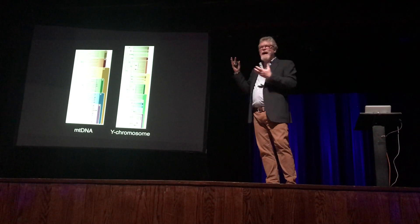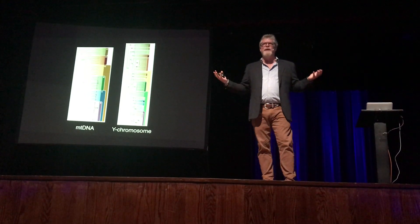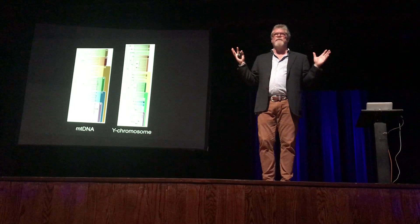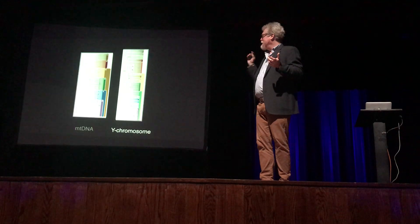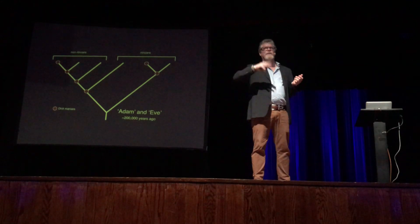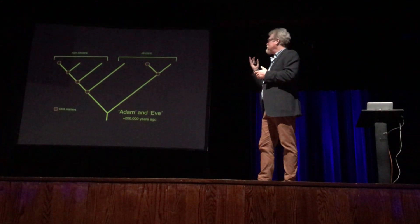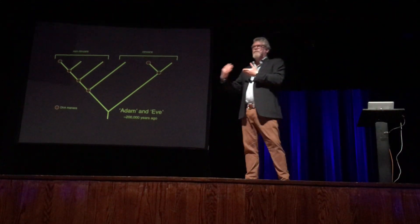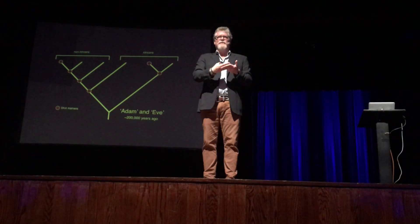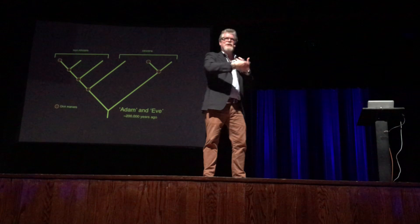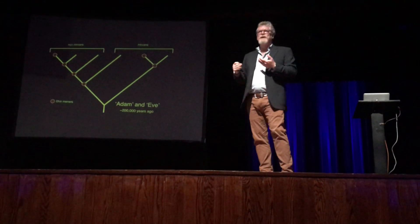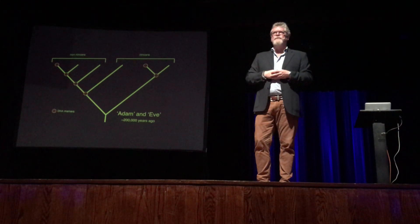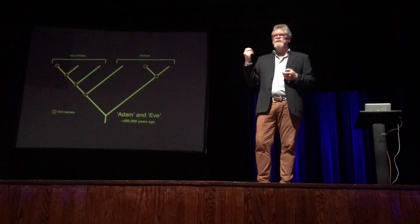By looking at these markers and assessing the pattern of genetic diversity in people from all over the world, what it shows us is that the deepest branches of the human family tree are found only in African populations. Because the depth of those branches is related to the mutational clock and to time, what that reveals is that humans have been accumulating diversity in Africa longer than anywhere else — and therefore that our species originated on the African continent.